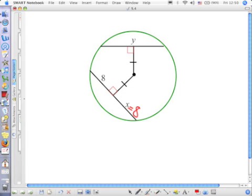And since they are the same distance from the center of the circle, then the chords themselves are congruent.